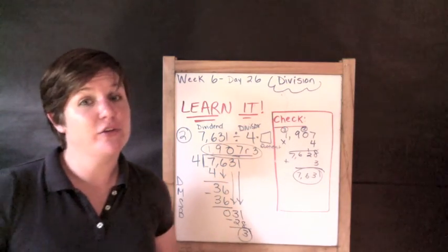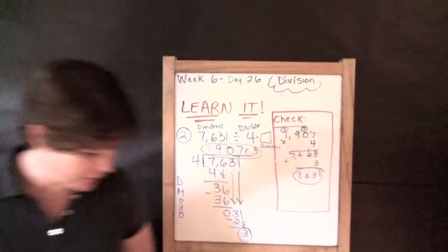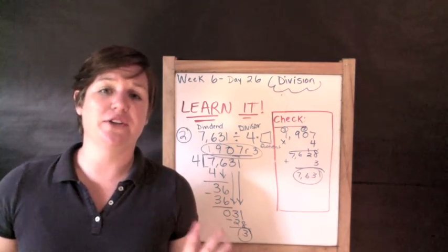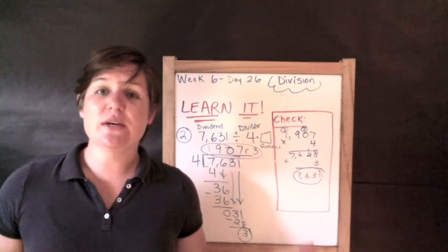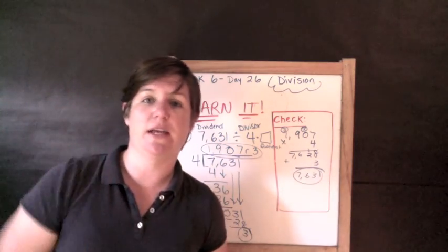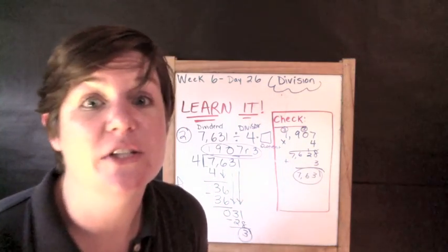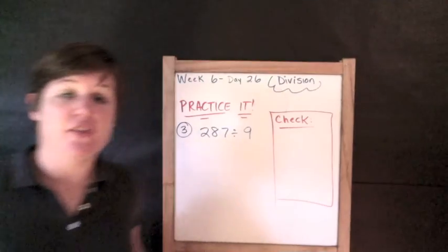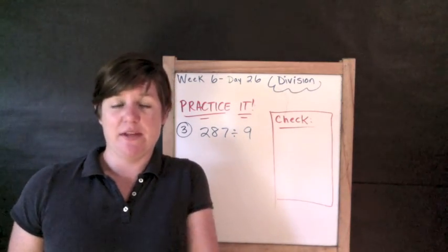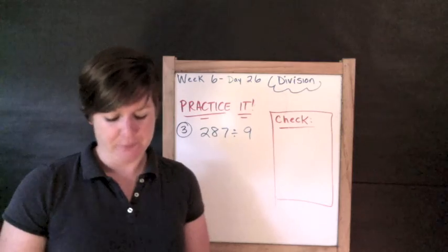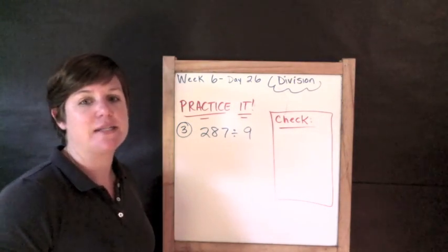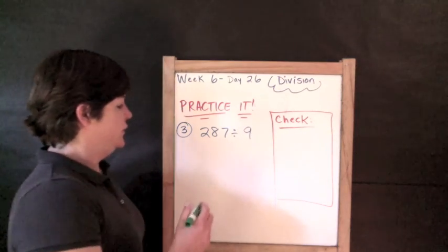Now I want you to try numbers three and four on your own. If you get stuck, come right back — pause it and do it along with me by pressing play and pause as we go. Let's try number three together: 287 divided by 9.